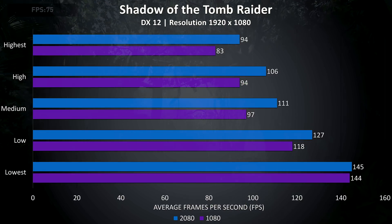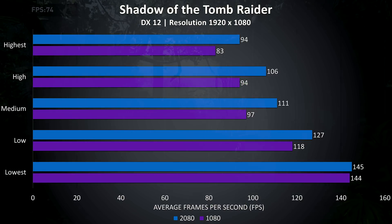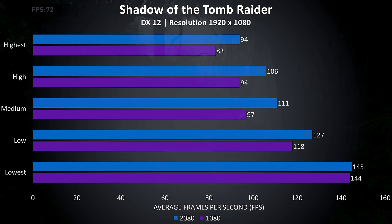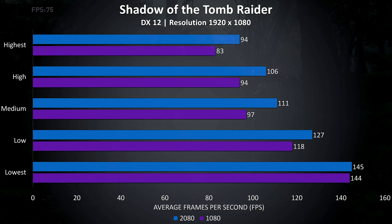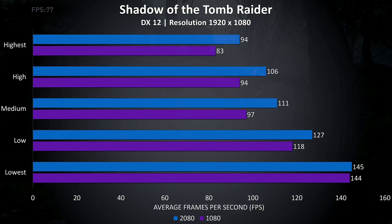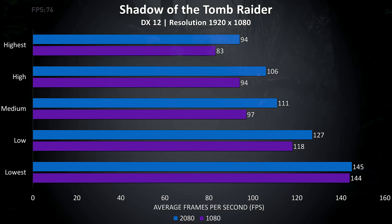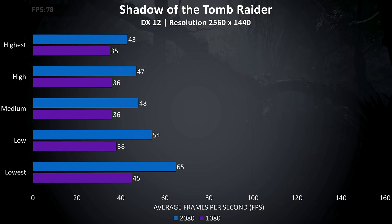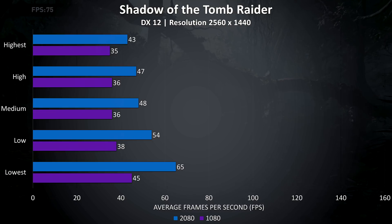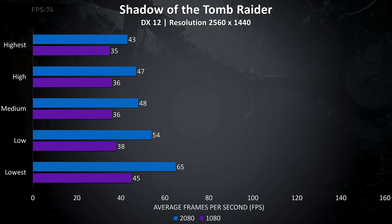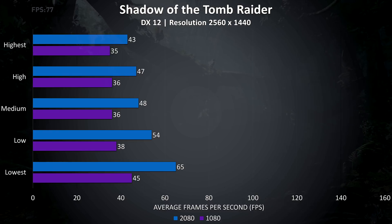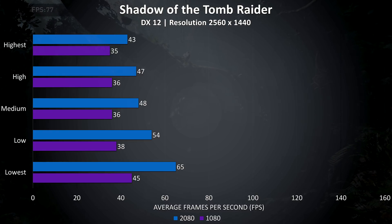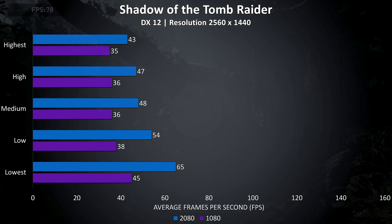Shadow of the Tomb Raider was tested with the built-in benchmark. With the highest settings at 1080p there was a 13% improvement to average frame rate with the 2080 compared to the 1080, and then less of a difference at the lower settings. At 1440p there was a larger 23% improvement to average frame rate at highest settings, and then this gap got larger at the lower settings, with a 44% improvement at lowest settings with the 2080.